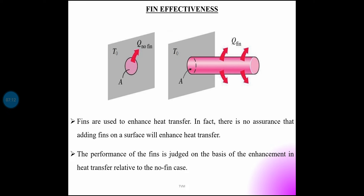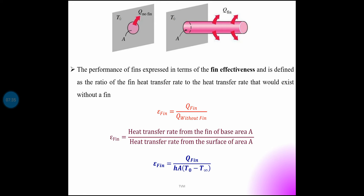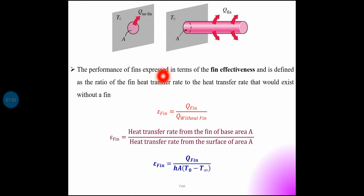The fin is judged on the basis of enhancement in heat transfer relative to the no-fin case. Fin effectiveness is defined as the ratio of the fin heat transfer rate to the heat transfer rate that would exist without a fin. Fin performance is expressed in terms of fin effectiveness, and the equation is epsilon-fin equals q-fin divided by q-without-fin.